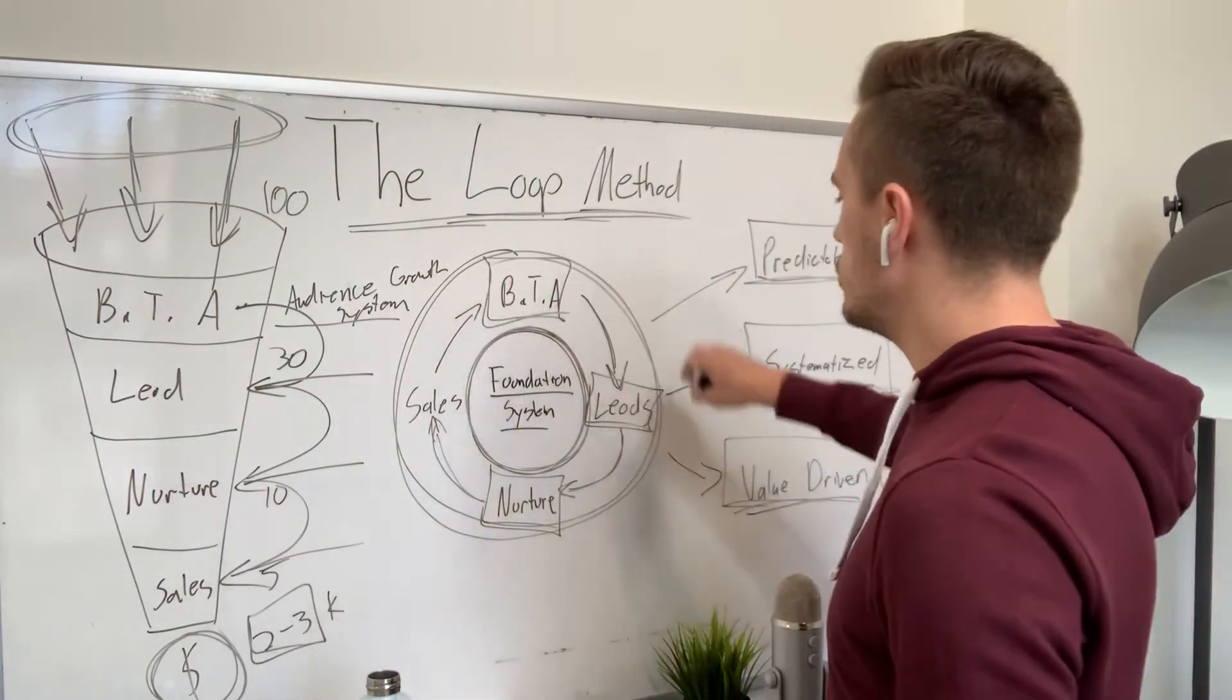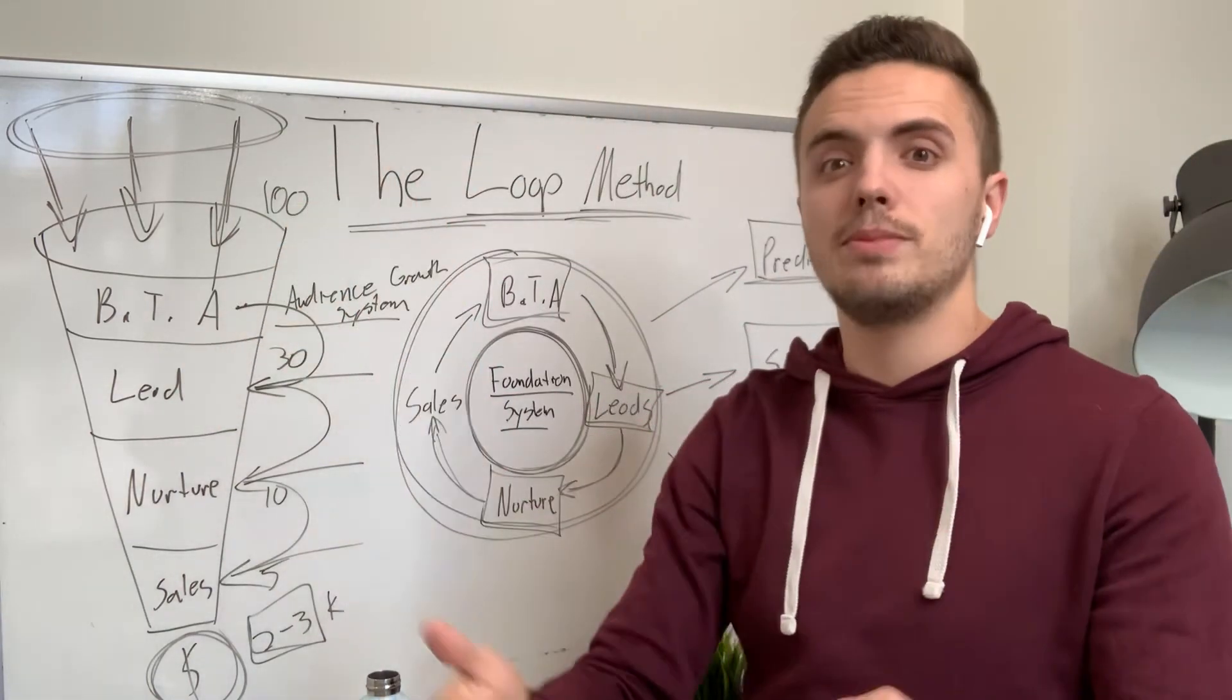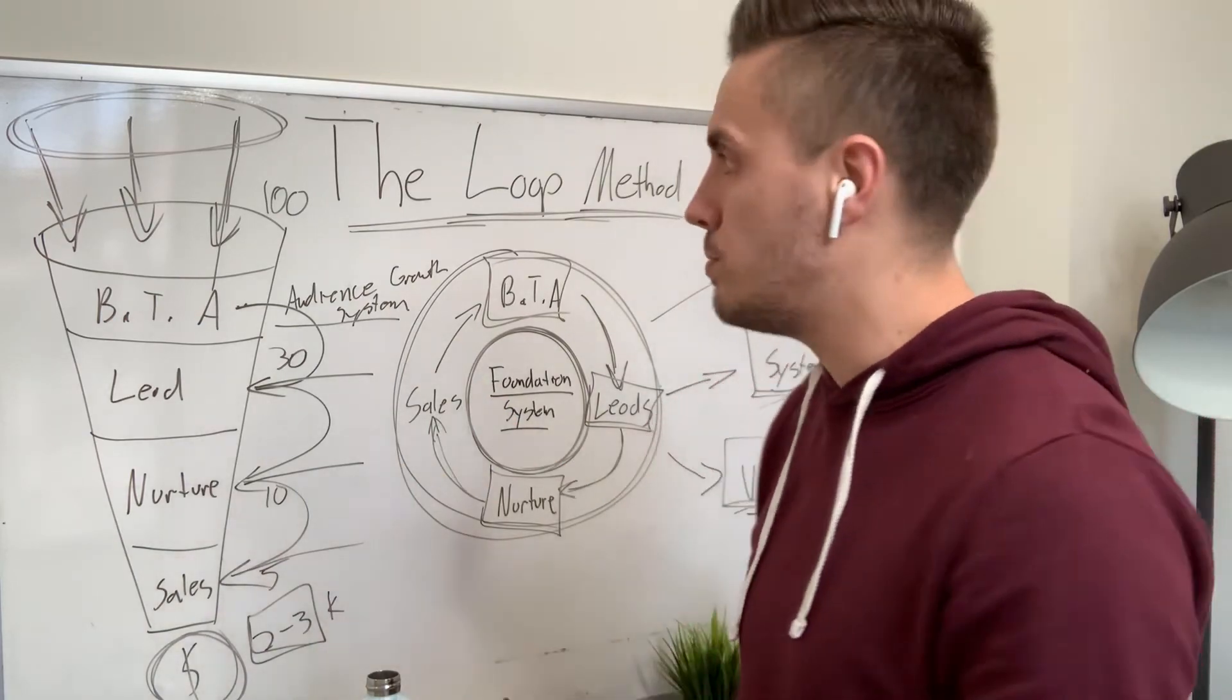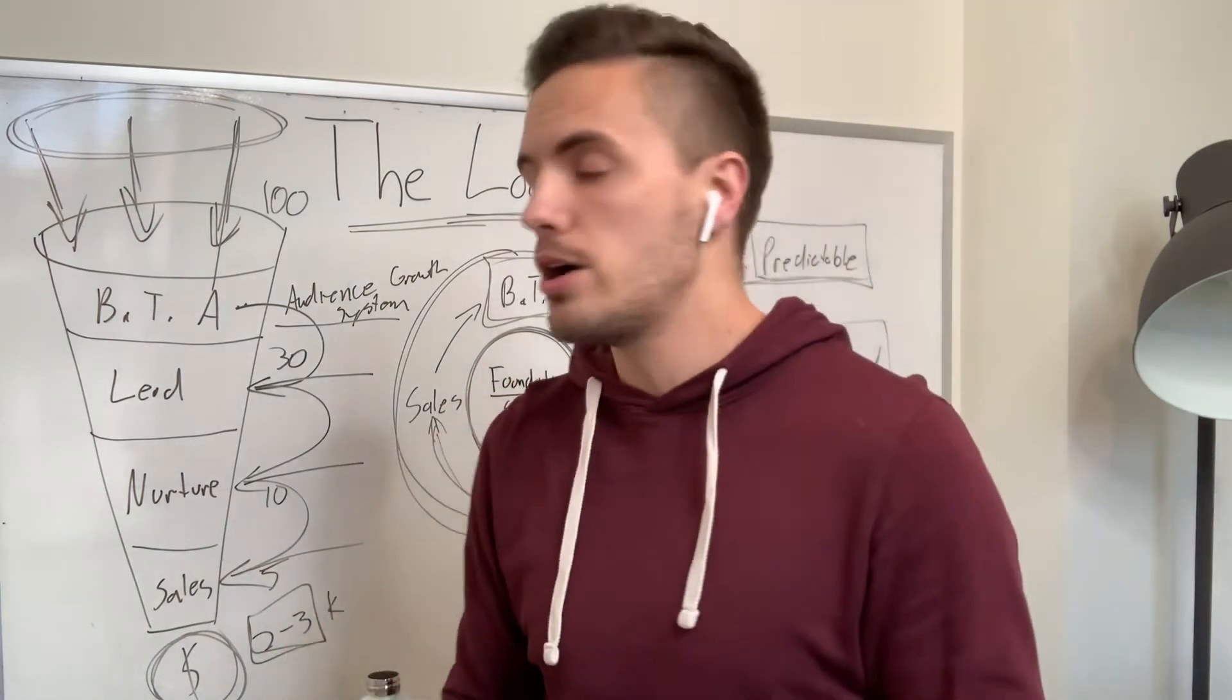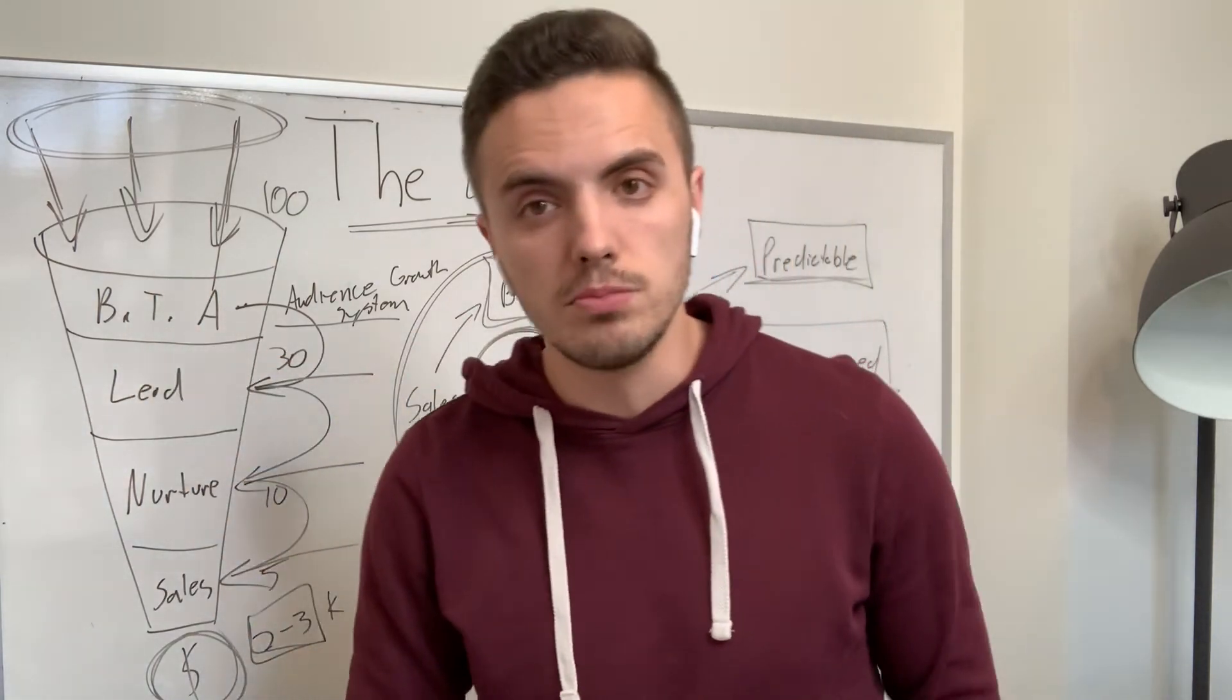But the cool thing is, since it's the loop method, and when it's predictable, if you keep putting things in the front end, things will come out the bottom end. And that's why we always say what you put into your business, the input equals output. So input x amount of targeted audience members, follow the system, and you will get predictable sales.